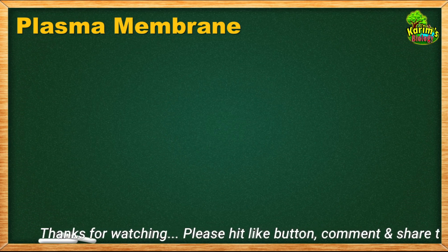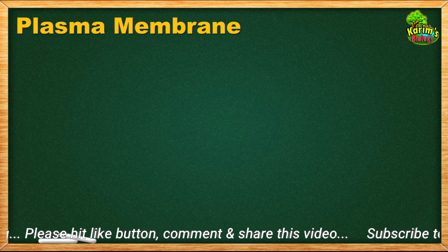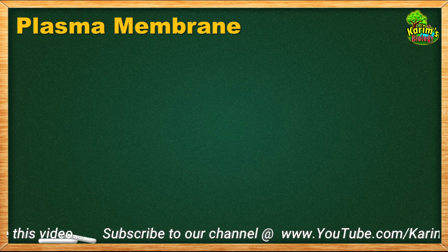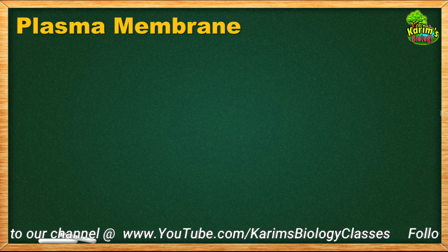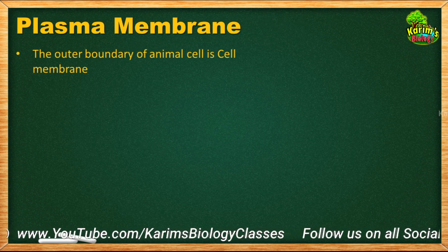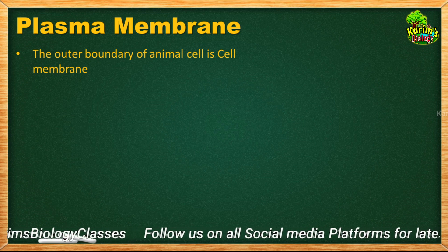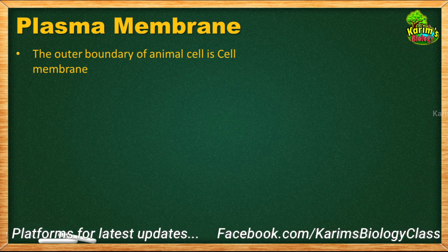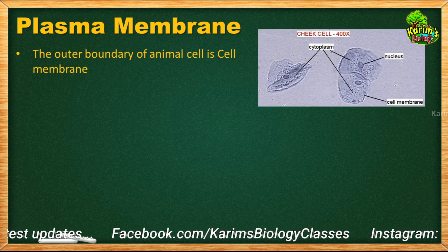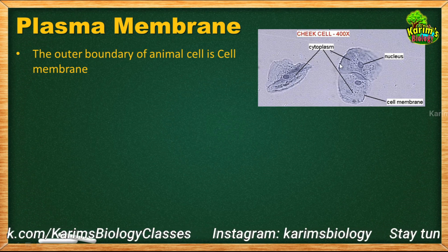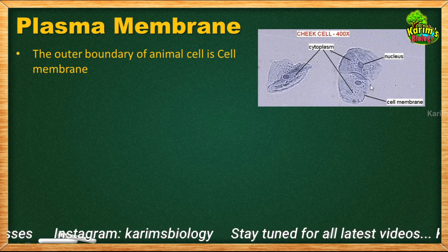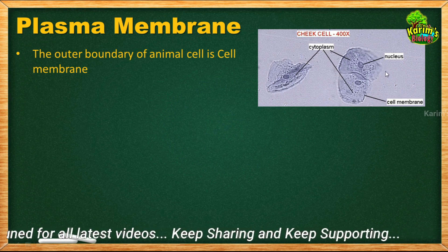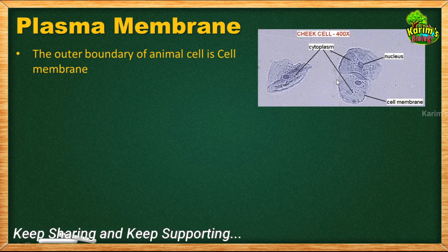In this session I am going to explain about plasma membrane. In the previous session I told you that plasma membrane is the common membrane present in both plant and animal cells. In the case of animal cells, the outermost boundary is the cell membrane, also called plasma membrane. In animal cells you cannot find anything else — only cytoplasm surrounded by a thin membrane called cell membrane, and above that membrane you cannot see anything else.